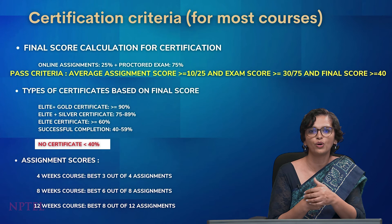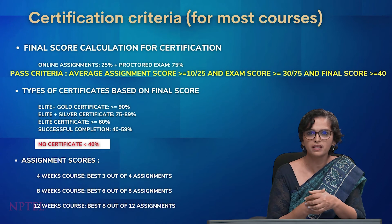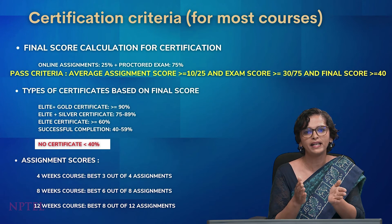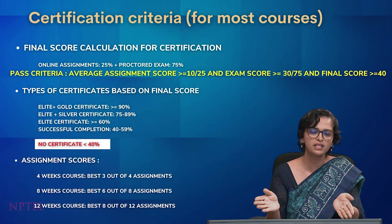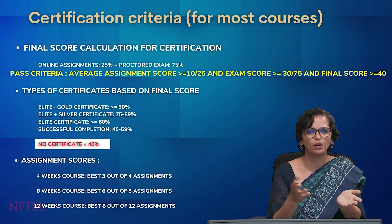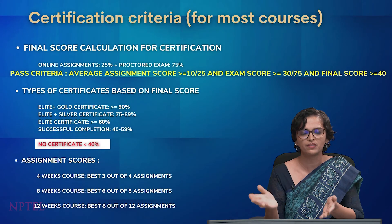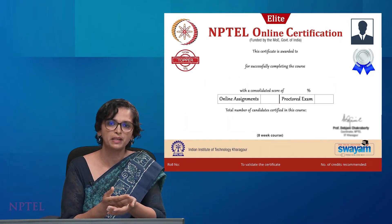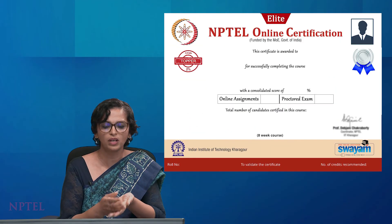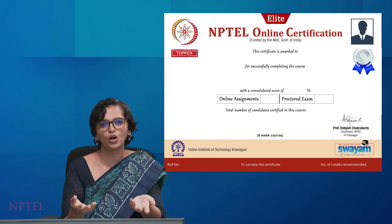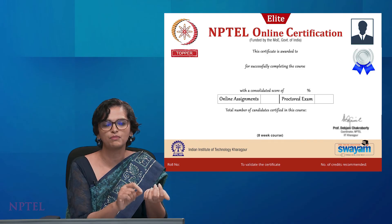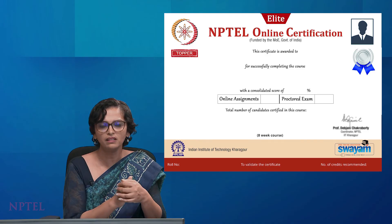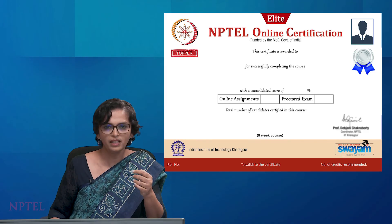We also have categories for toppers in the course. Depending on the number of people certified, we recognize toppers — it could be one topper, two toppers, five toppers, top one percent, top two percent, and so on. If you are a topper in the course, there will also be a seal on your certificate indicating that you are a topper.